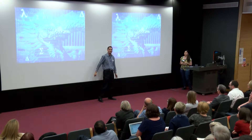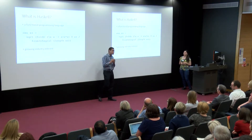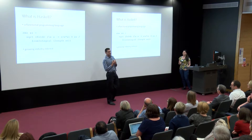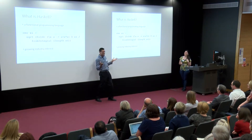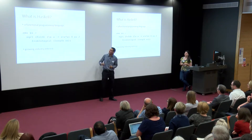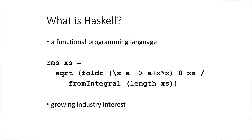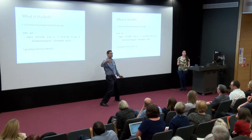You might be asking, if you're not a computer scientist: what is Haskell? I'm going to give you the one-minute crash course. Here is a root mean square calculation. If you were doing this in C or Java, you would obviously use a for loop, looping over your floating point array of values.